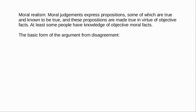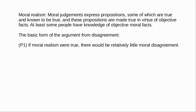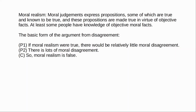With that said, we can specify the argument from disagreement. The standard form of the argument is something like this: if moral realism were true there would be relatively little moral disagreement, but there is lots of moral disagreement, so moral realism is false. It's a well-known fact that moral codes vary considerably from one society to another, even from one individual to another within the same society. Many people think that this has consequences for moral realism — if there were moral facts and we could have knowledge of these moral facts, we wouldn't expect to see this kind of disagreement.